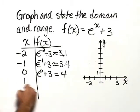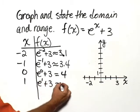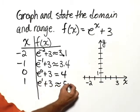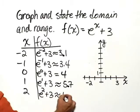For x equals 1, we would have e to the 1 plus 3. On a calculator, that's approximately equal to 5.7. And for x is equal to 2, e squared plus 3 is approximately equal to 10.4.